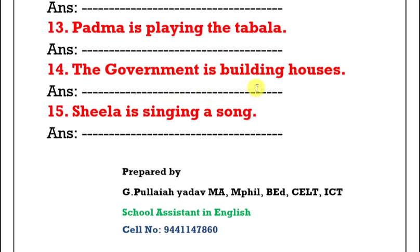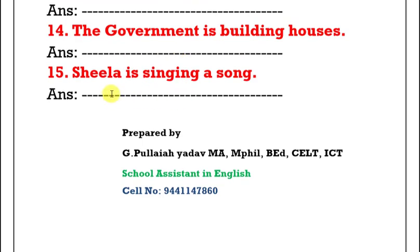Fourteenth: 'The government is building houses.' Houses is plural, so: 'Houses are being built by the government.' The V3 form of build is built. Fifteenth: 'Sheila is singing a song.' Answer: 'A song is being sung by Sheila.' These are all the worksheet answers.